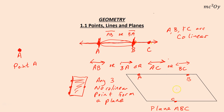One last thing: these points are called coplanar. Since they lie on the same plane, you could say A, B, and C are coplanar — meaning together on a plane.